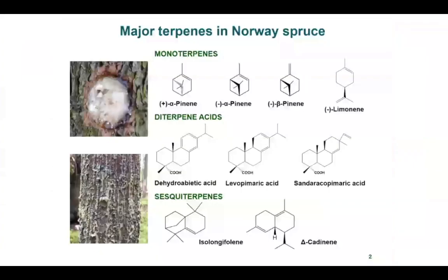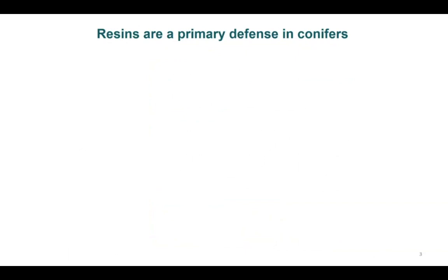Monoterpenes and diterpene acids contribute to the majority of terpenes in conifers, whereas sesquiterpenes are present only in trace amounts. Terpenes are produced and stored in specialized structures called resin ducts constitutively upon tissue damage. The resins stored under high pressure are released to fend off herbivores and pathogens. The synthesis of terpenes can also be induced upon abiotic and biotic stresses, resulting in high variation in both the concentration and composition of these chemicals. Terpenes containing resins are a primary defense in conifers and act as a general defense against many herbivores and pathogens.